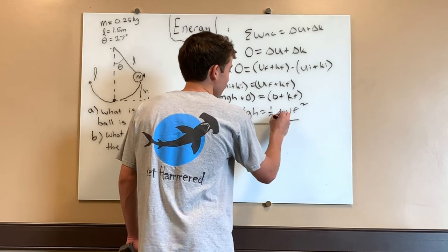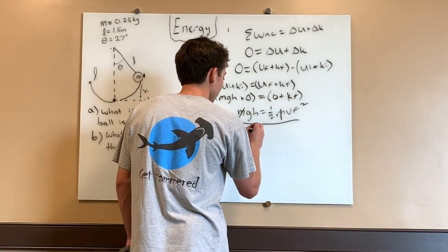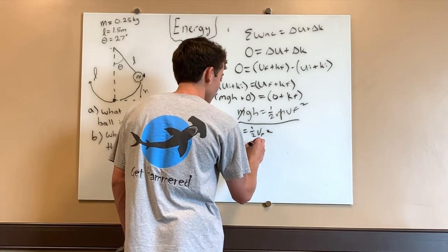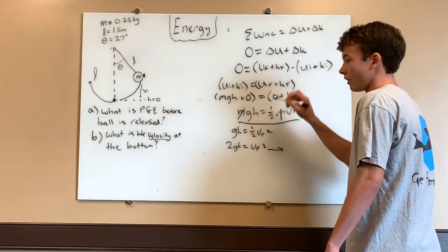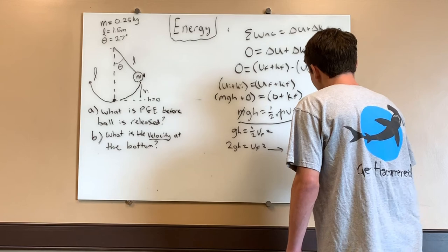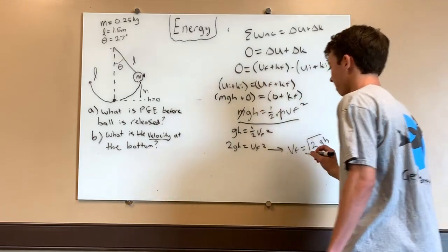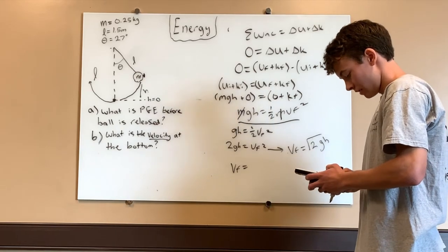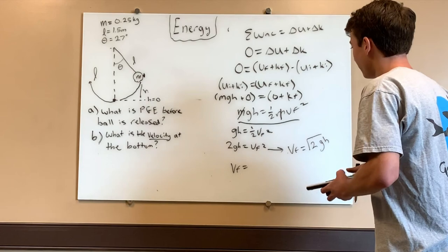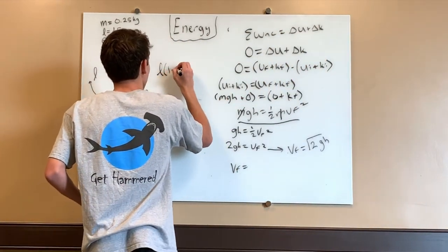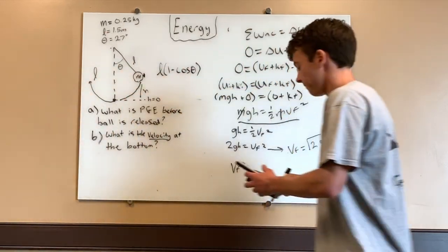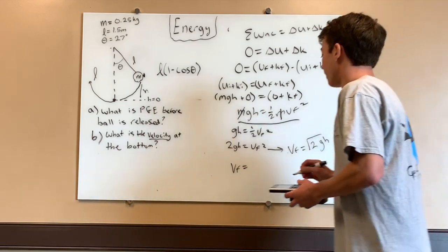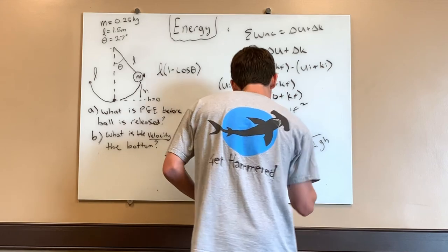So we have mgh equals one-half mv_f squared and we're solving for velocity. We can cancel the m's on both sides, giving us gh equals one-half v_f squared. Bringing over the 2: 2gh equals v_f squared. Taking the square root: v_f equals the square root of 2gh. Plugging in — the square root of 2 times 9.8 times h, where h equals L times (1 minus cosine theta), with L equal to 1.5 and theta equal to 27 degrees — we get a final velocity of 1.79 meters per second.